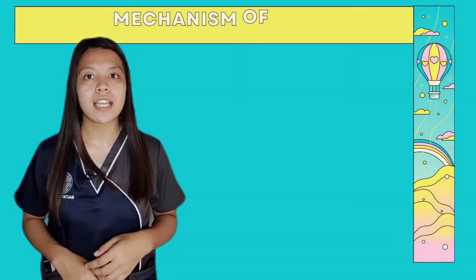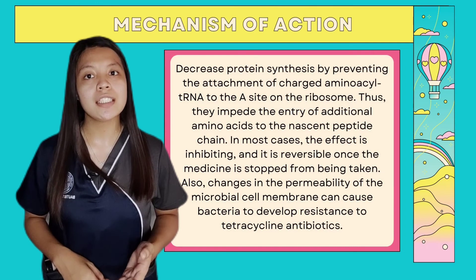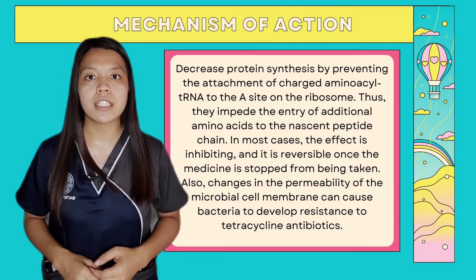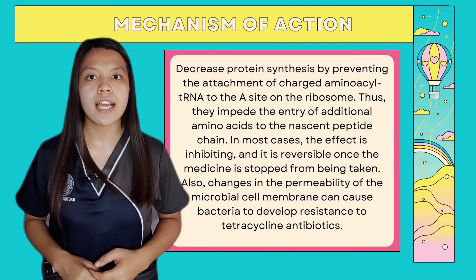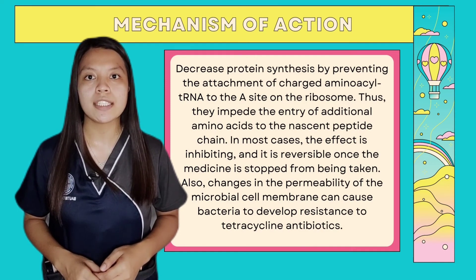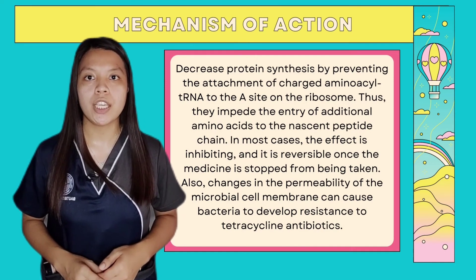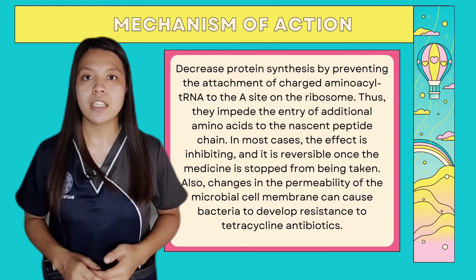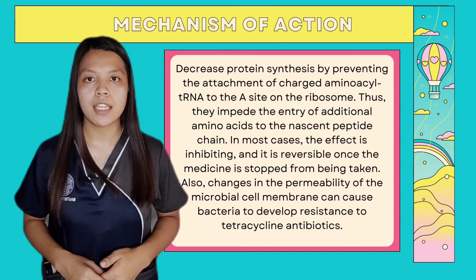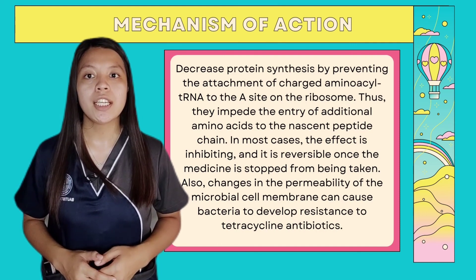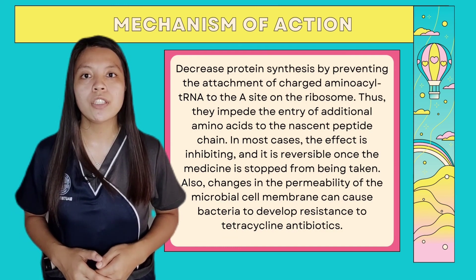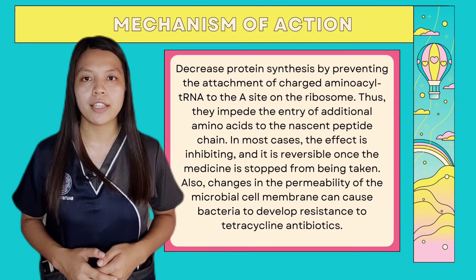Now, what are tetracyclines' mechanism of action? Tetracyclines decrease protein synthesis by preventing the attachment of charged aminoacyl tRNA to the A site on the ribosome. Thus, they impede the entry of additional amino acids to the nascent peptide chain. In most cases, the effect is inhibiting and it is reversible once the medicine is stopped. Also, changes in the permeability of the microbial cell membrane can cause bacteria to develop resistance to the tetracycline antibiotics.